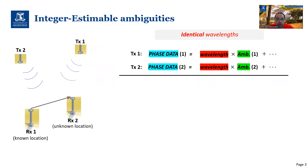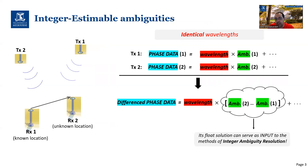We can form differencing, or differences of phase data from multiple transmitters, such as double differencing, to form double difference ambiguities as a special case of integer estimable ambiguities, whose float solution can serve as inputs to the method of integer ambiguity resolution.